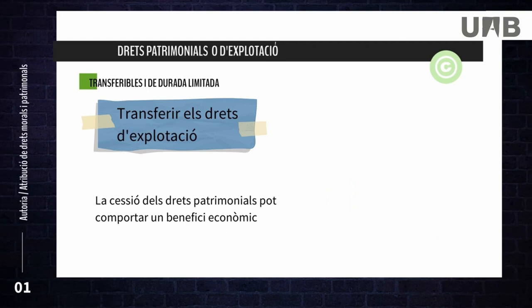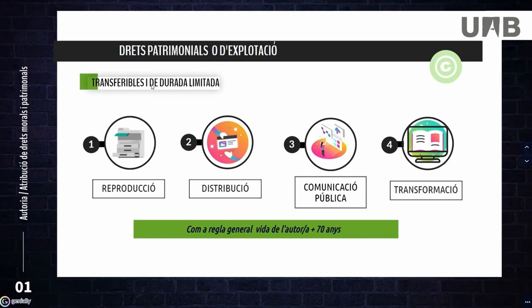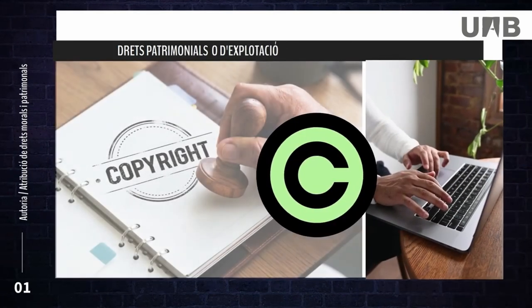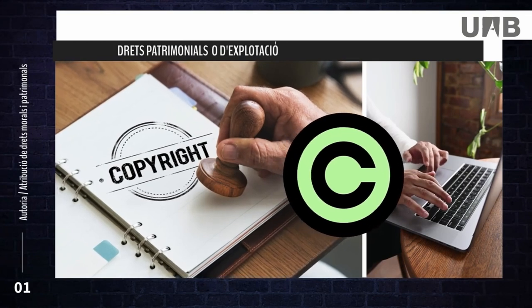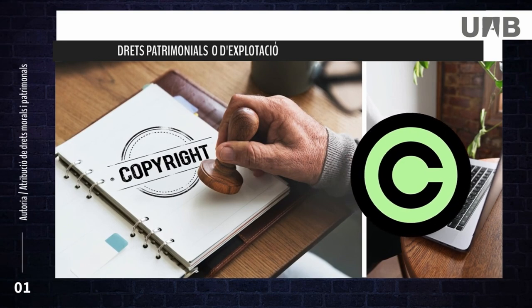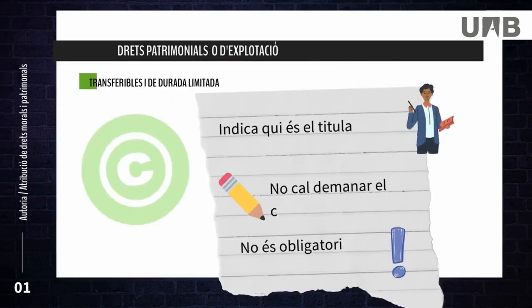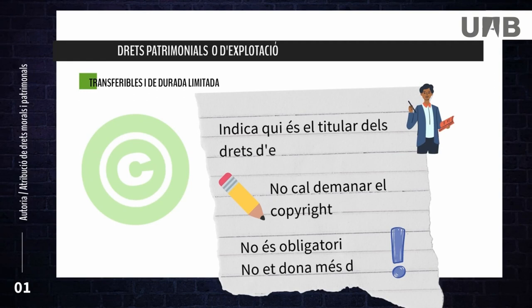These rights may lead to economic benefits, so the author is compensated for their intellectual work and contribution to human knowledge. Copyright — literally 'right to copy' — is the Anglo-Saxon formula for exploitation rights. The copyright symbol associated with a name indicates ownership; it is sometimes accompanied by 'all rights reserved.' No administrative procedures are needed to use it in your work, and its use is not mandatory.